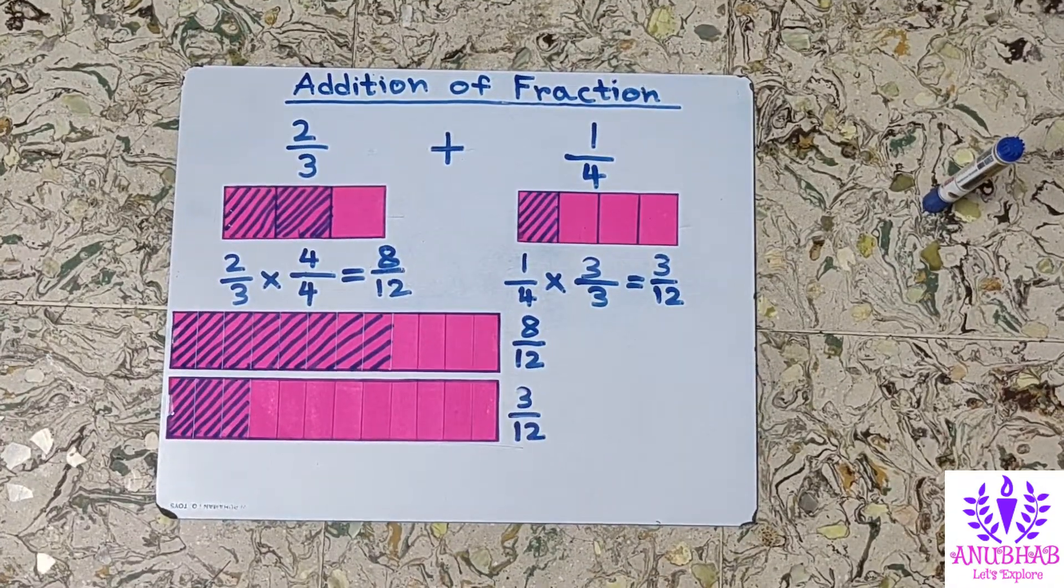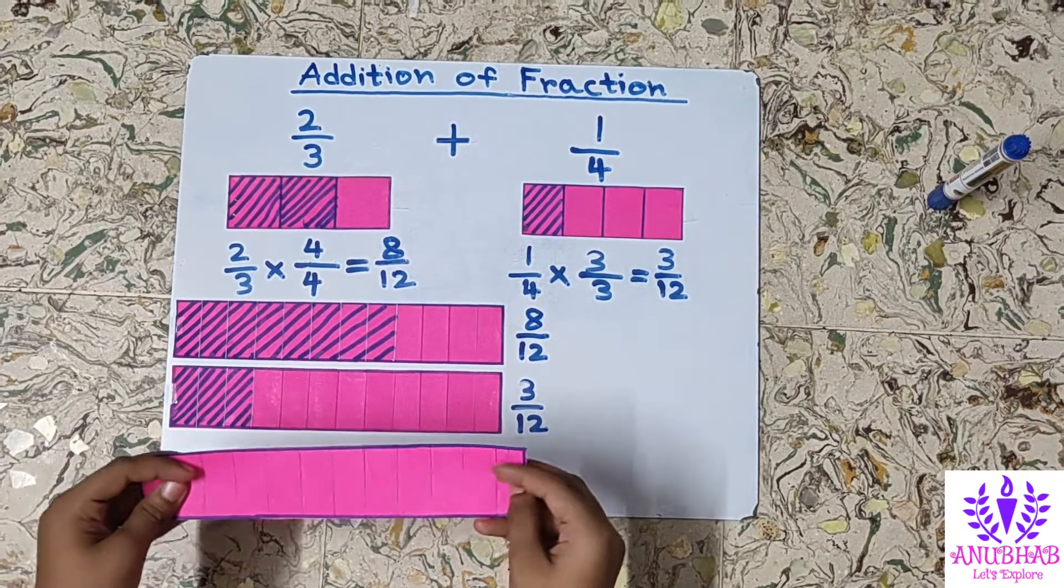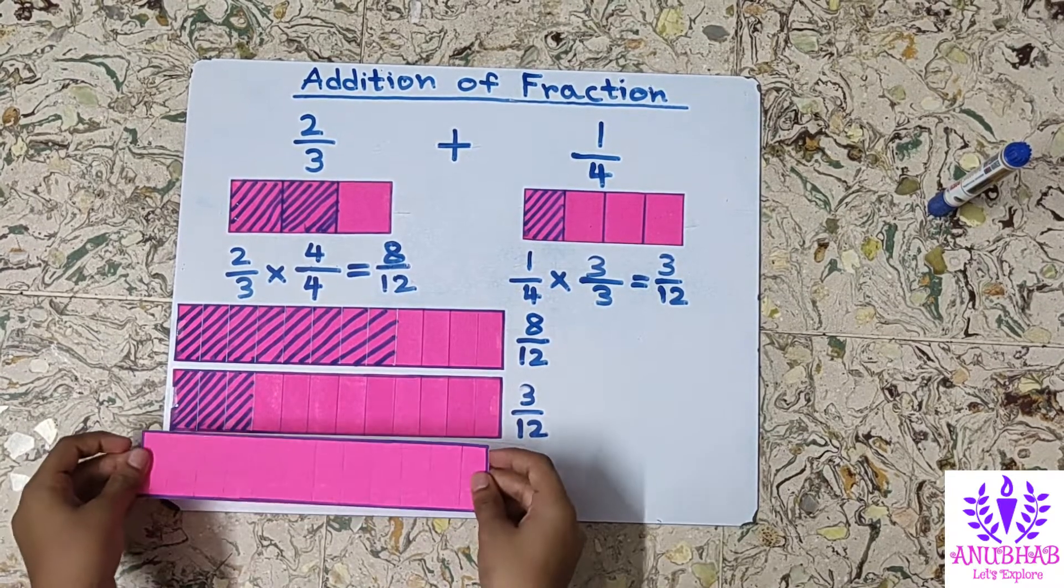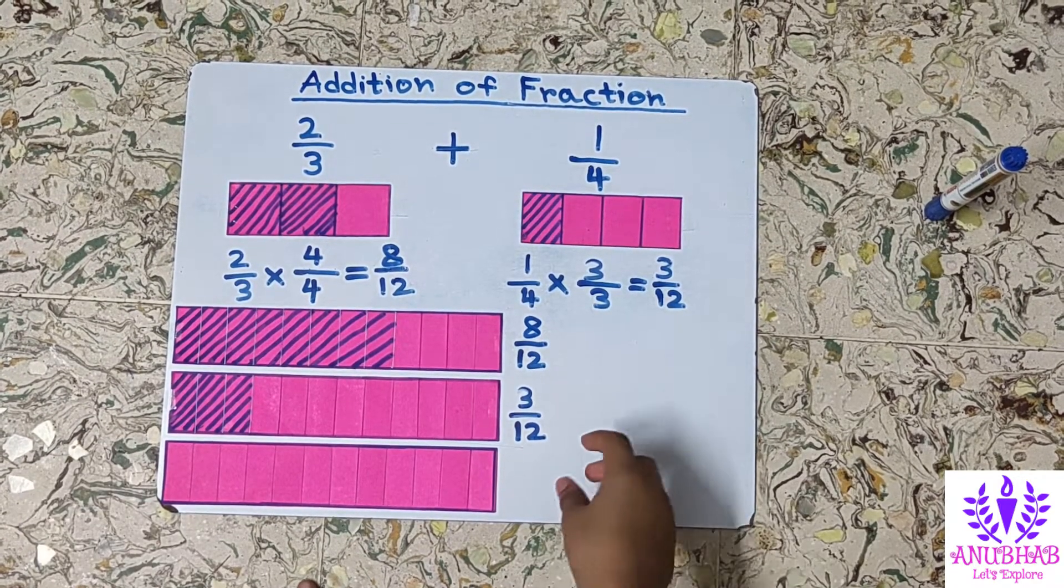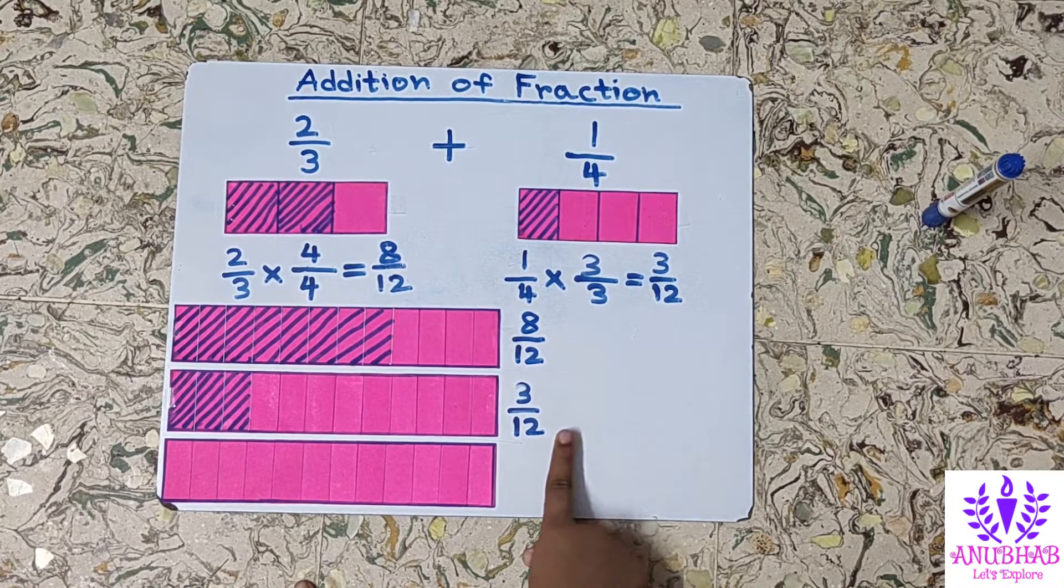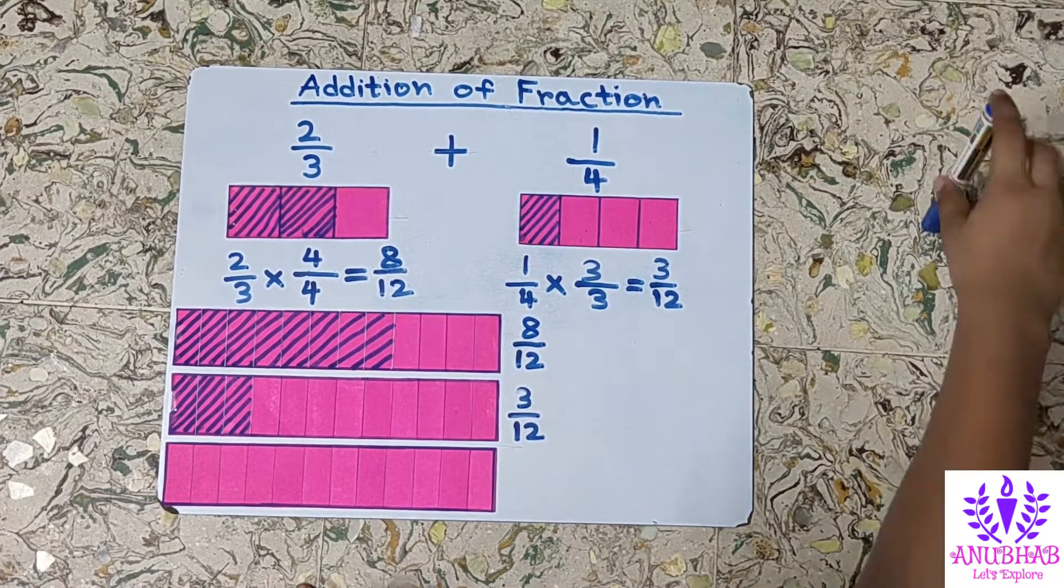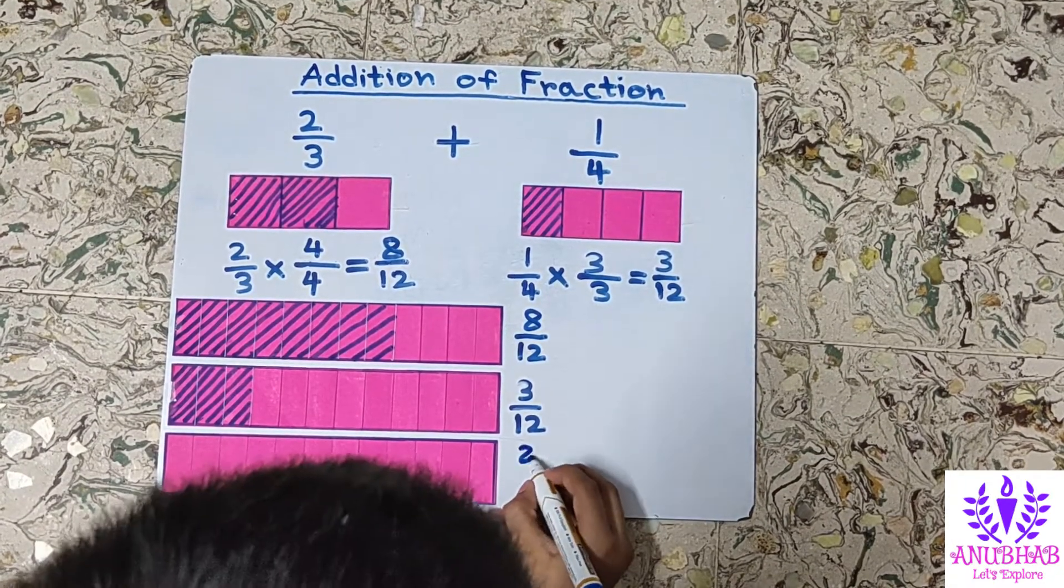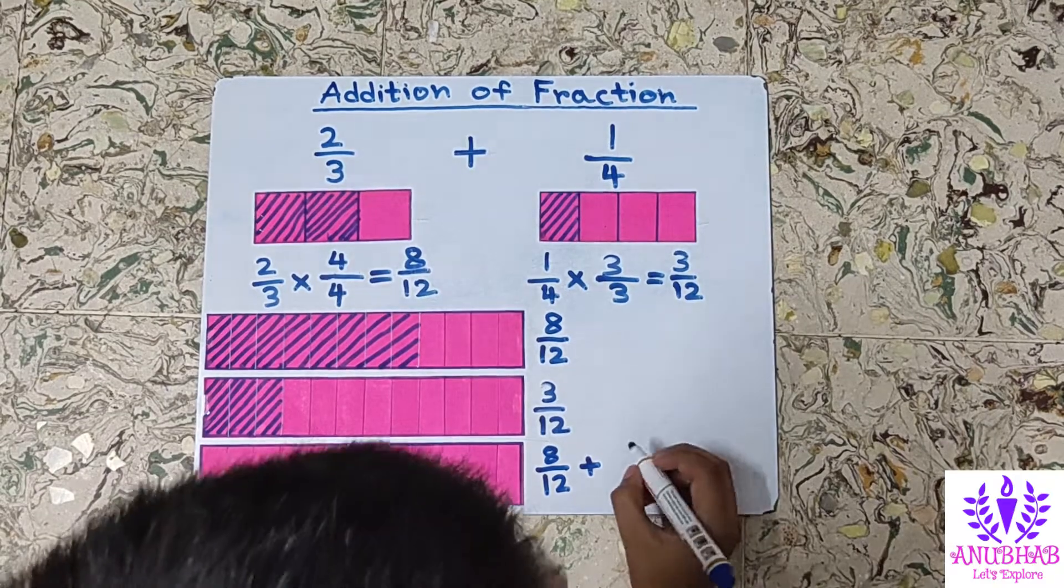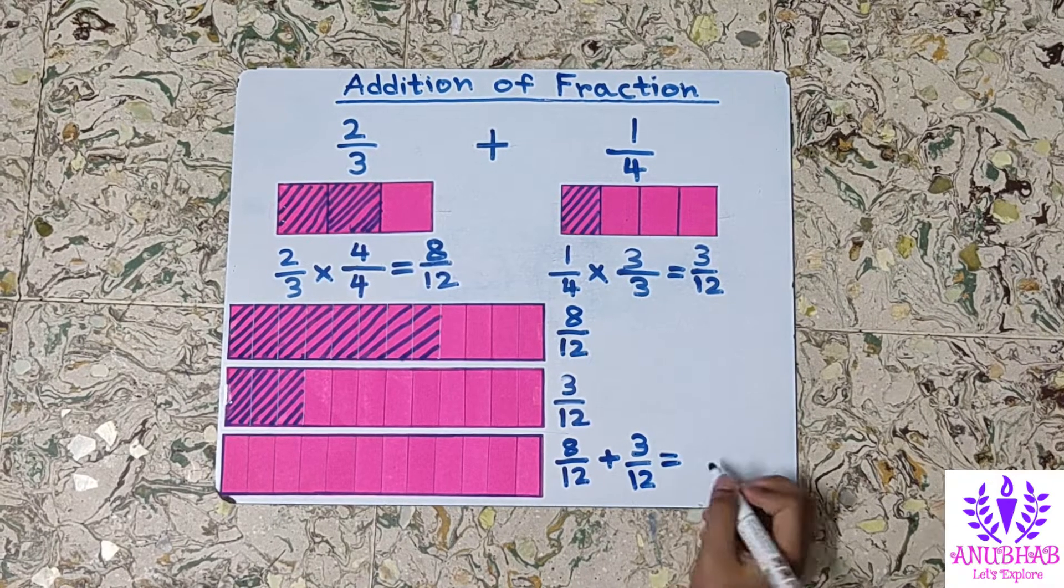Let's try to find the answer. For this I have taken again a strip of colored paper and I have folded it into 12 equal parts. Now we will do the addition of 8 by 12 and 3 by 12. As the denominators are equal, we have to add the numerators only.